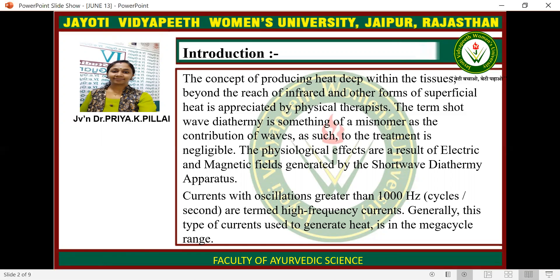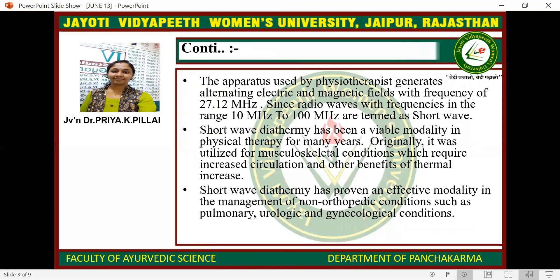Currents with oscillations greater than 1000 Hz are termed high frequency currents. Generally, this type of current used to generate heat is in the megacycle range. The factors used by the physiotherapist generate alternating electric current and magnetic fields with a frequency of 27.12 MHz. Since radio waves with frequency in the range of 10 MHz to 100 MHz are termed as short wave.